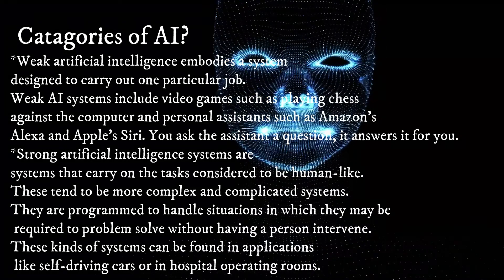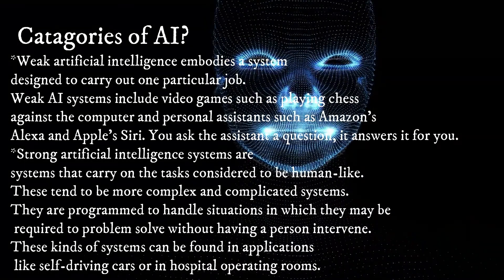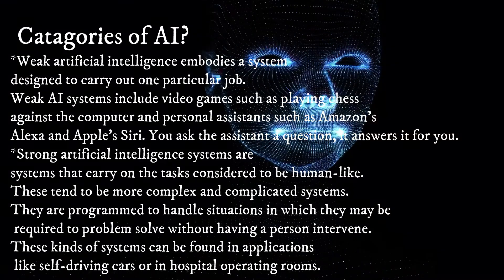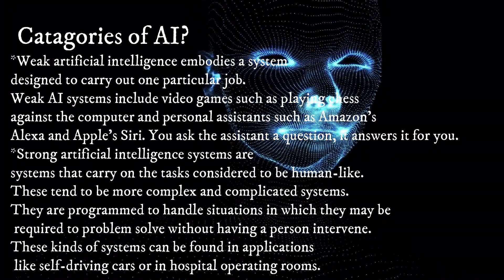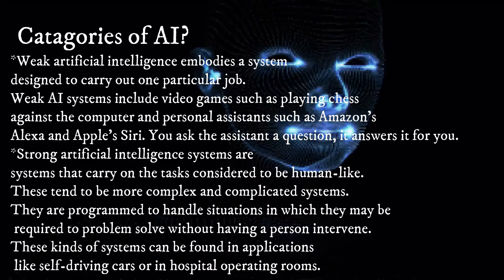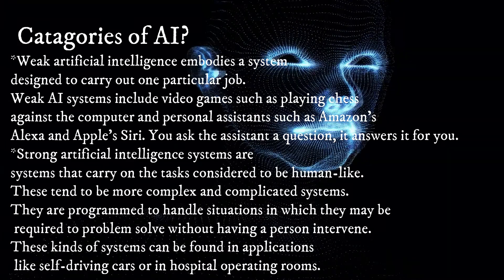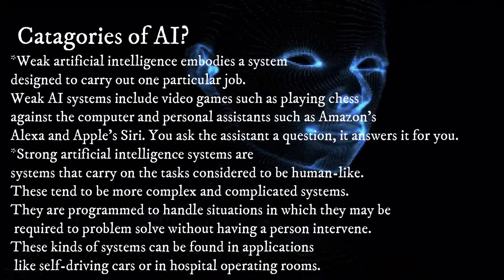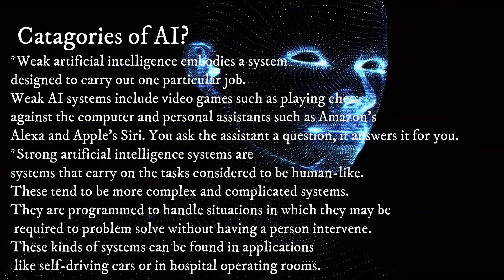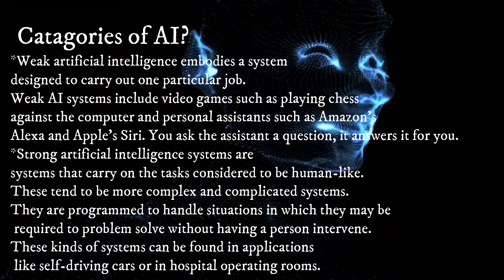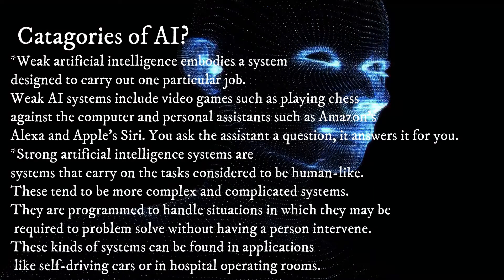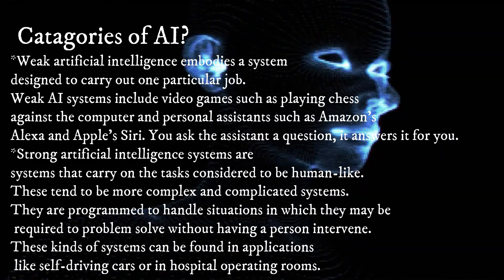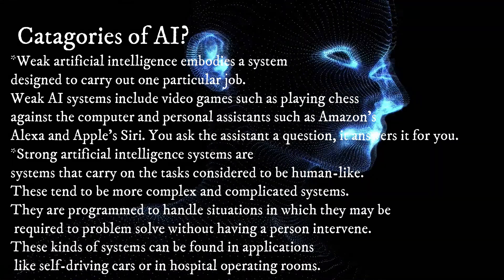Strong artificial intelligence systems are systems that carry on the tasks considered to be human-like. These tend to be more complex and complicated systems. They are programmed to handle situations in which they may be required to problem-solve without having a person intervene. These kinds of systems can be found in applications like self-driving cars or in hospital operating rooms.